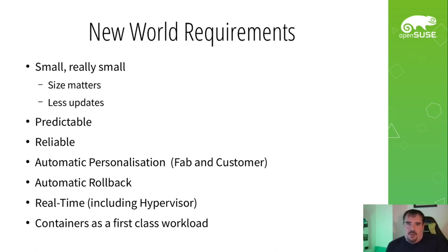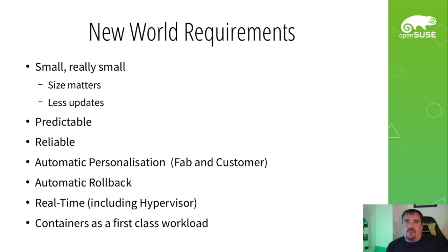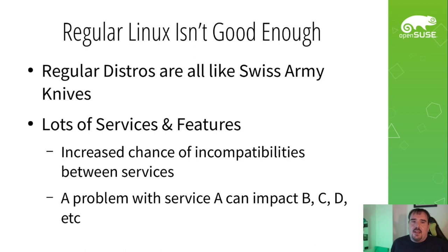As I discussed with the O2 and IoT examples, any kind of failure of updating needs to be able to automatically roll back. There are lots of places, especially in the IoT world, where real-time is a hard requirement. And in almost all these cases, we're talking about having containers or some kind of containerized framework as the first-class workload, if not the sole workload running on top of this operating system. With these requirements, these examples, and these use cases, regular Linux just isn't good enough anymore — and it breaks my heart to say that as a long-term OpenSUSE user.